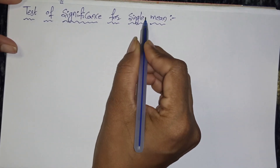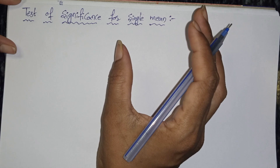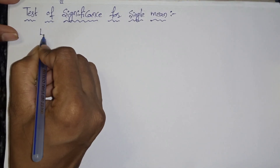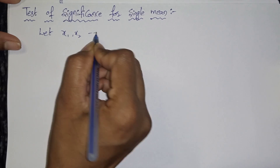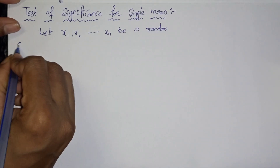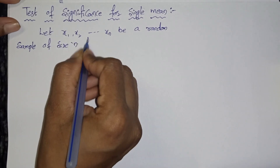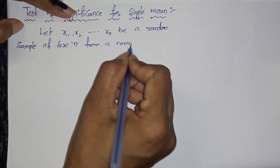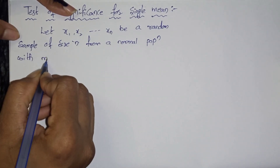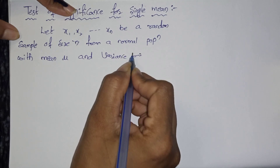So, let x1, x2, and so on xn be a random sample of size n from a normal population with mean mu and variance sigma square.